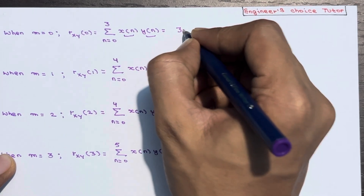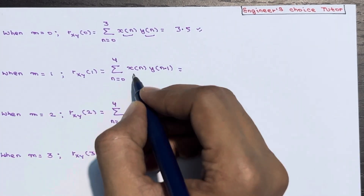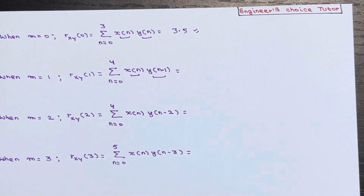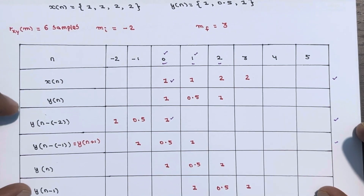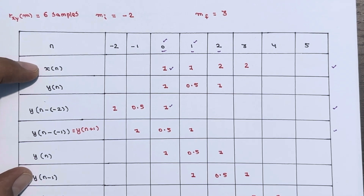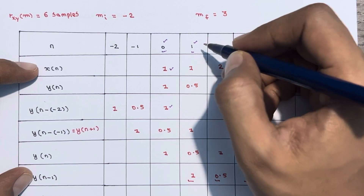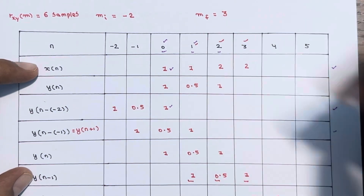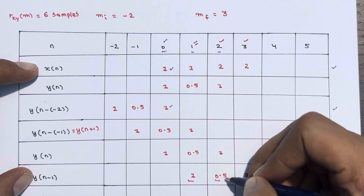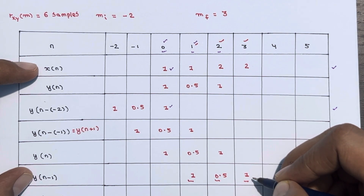When m = 1, we need x(n) times y(n-1). The common instances are at n = 1, 2, and 3. So 1 times 1 is 1, plus 2 times 0.5 is 1, plus 2 times 1 is 2. That gives 1 plus 1 plus 2 equals 4. Therefore rxy(1) = 4.